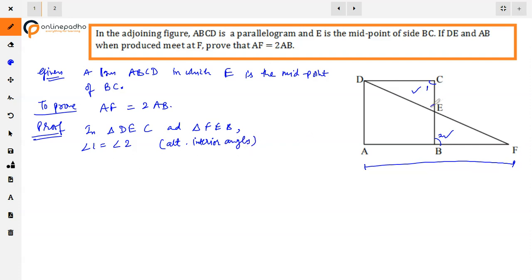Next, vertically opposite angles: angle 3 is equal to angle 4. CE is equal to EB because E is the midpoint of BC, which is given.